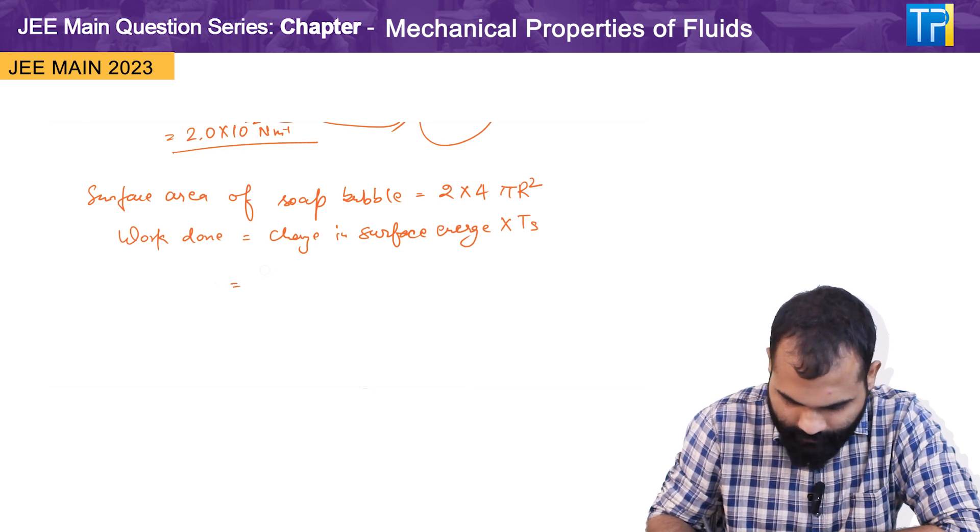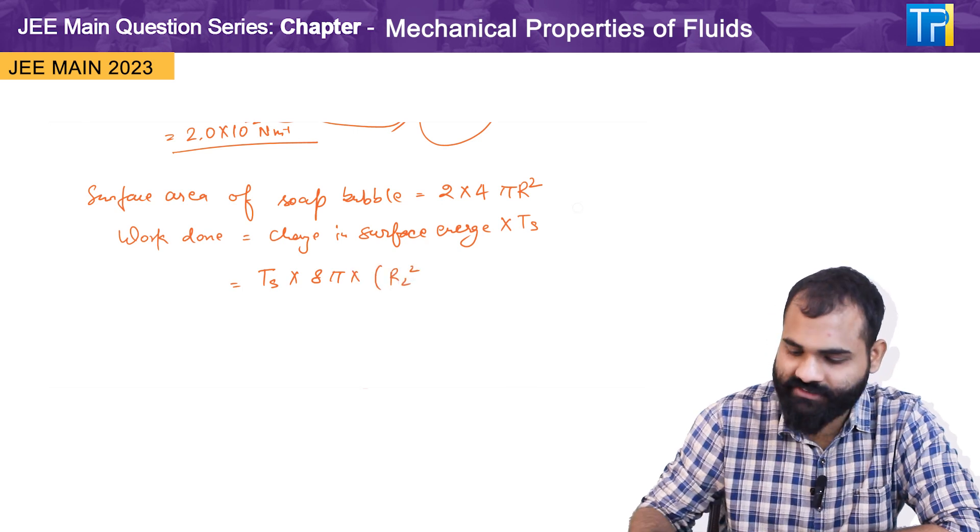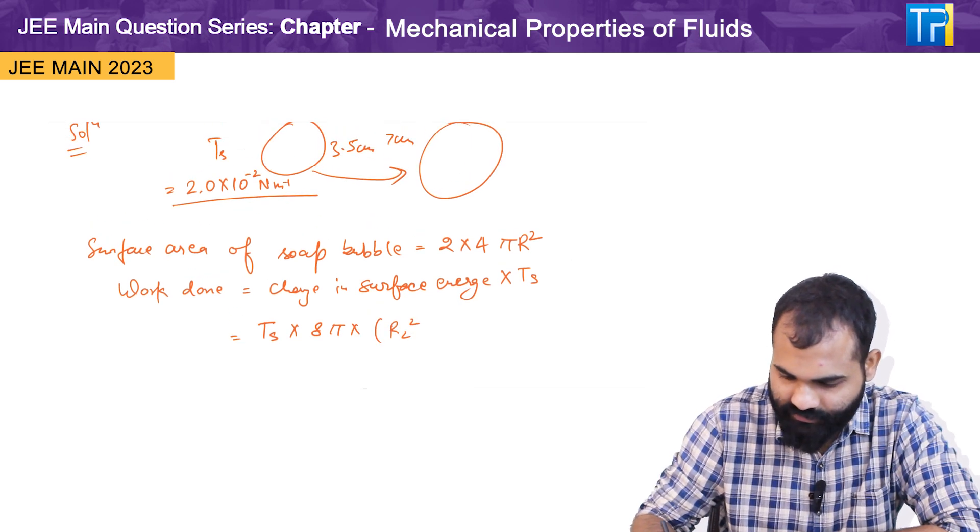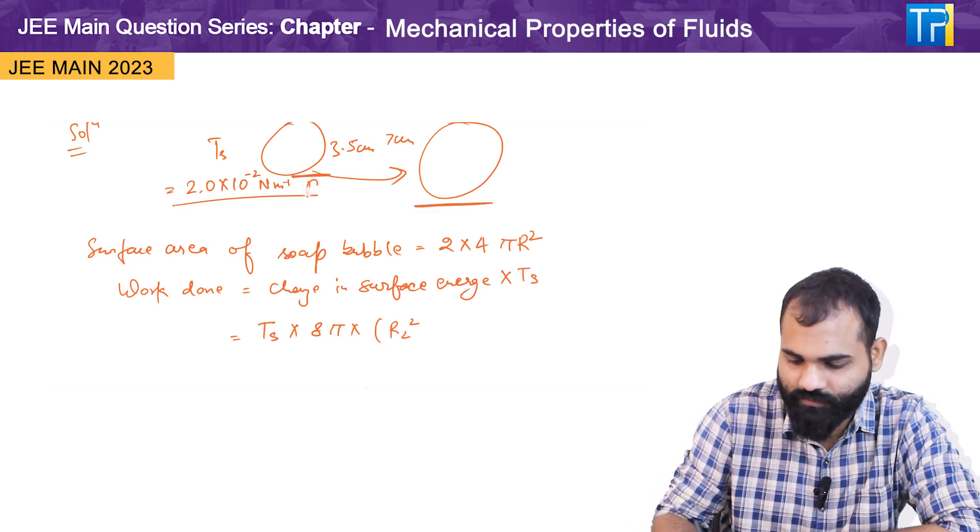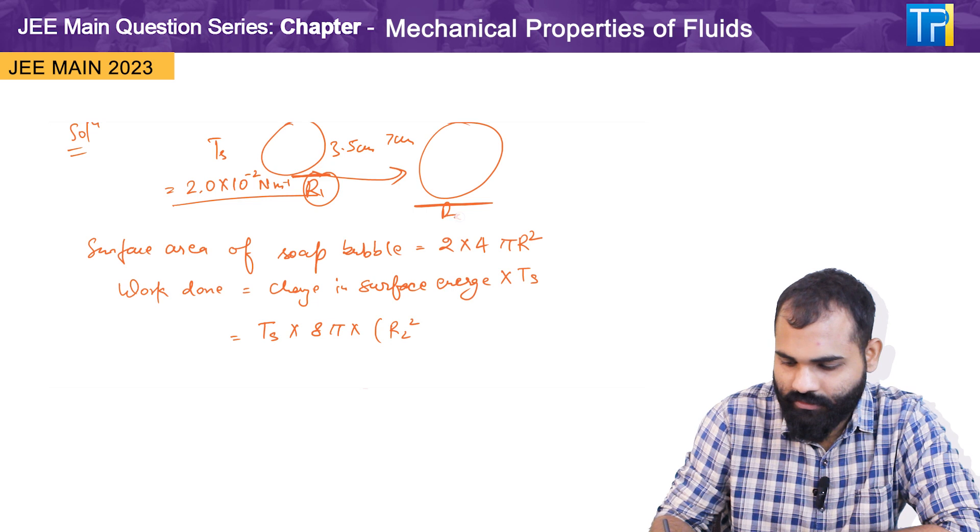It will become T into 8 pi into r2 square. Let us say this is the radius of bubble 2 and r1 is the radius of bubble 1.